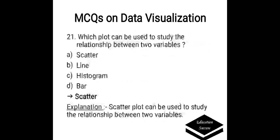Which plot can be used to study the relationship between two variables? Options are: A. Scatter, B. Line, C. Histogram, D. Bar. Correct answer is scatter. Scatter plot can be used to study the relationship between two variables.